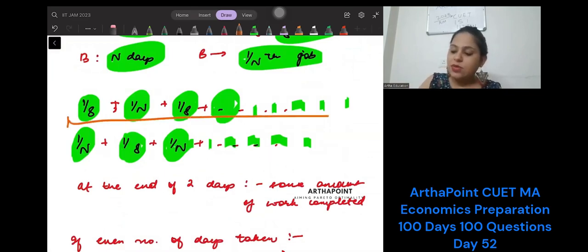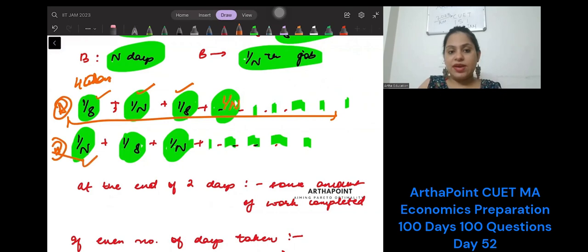Then the two sums will be equal. So whether I add—suppose they take 4 days to complete the job, then it will be 1/8 + 1/N + 1/8 + 1/N when A starts the job. If B starts the job, it will be 1/N + 1/8 + 1/N + 1/8. So the same is coming by adding.